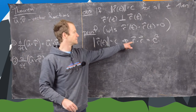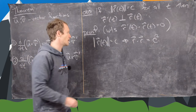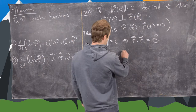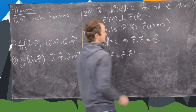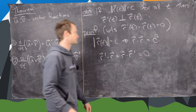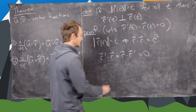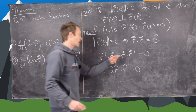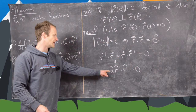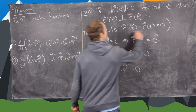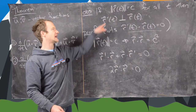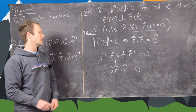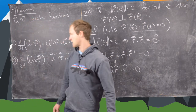The left hand side adds up to two times r prime dot r, because the dot product is commutative. Dividing by two gives us exactly what we need: r prime dot r equals zero. That tells us the tangent vector of this vector valued function is perpendicular to the curve itself.